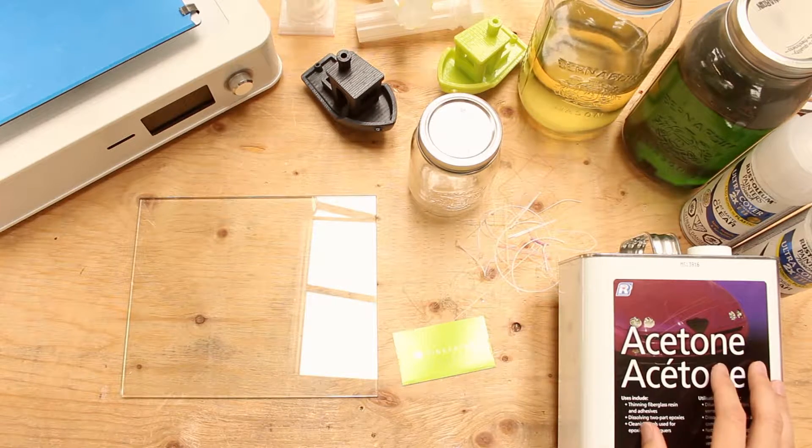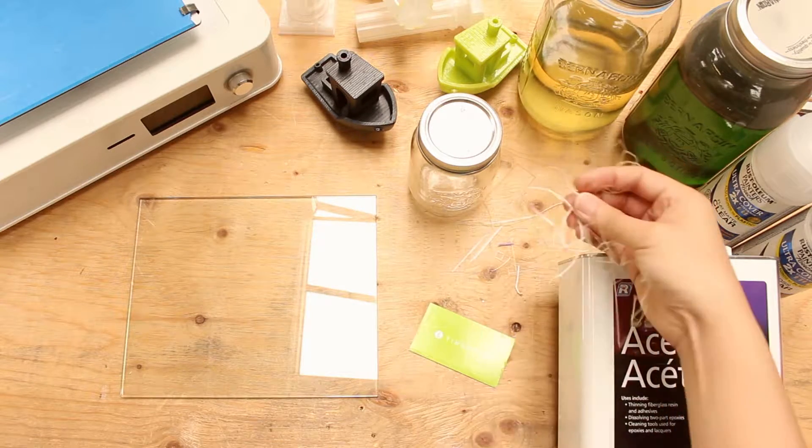To make PLA sludge, you will need acetone, PLA, a glass jar, and a protective mask.